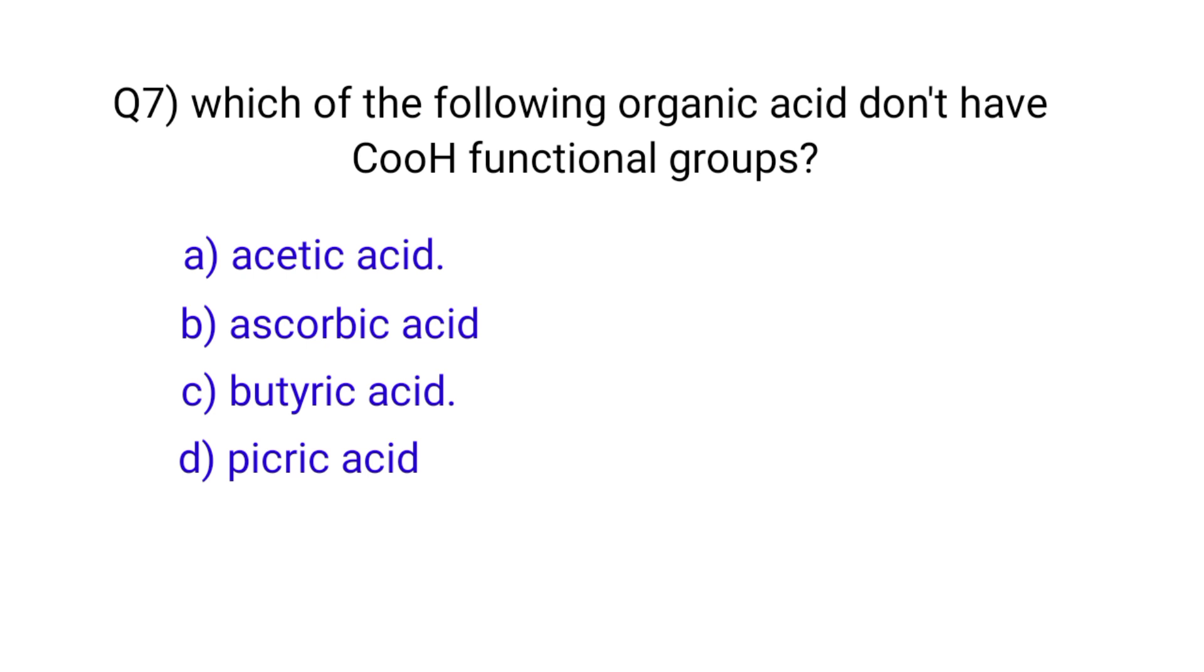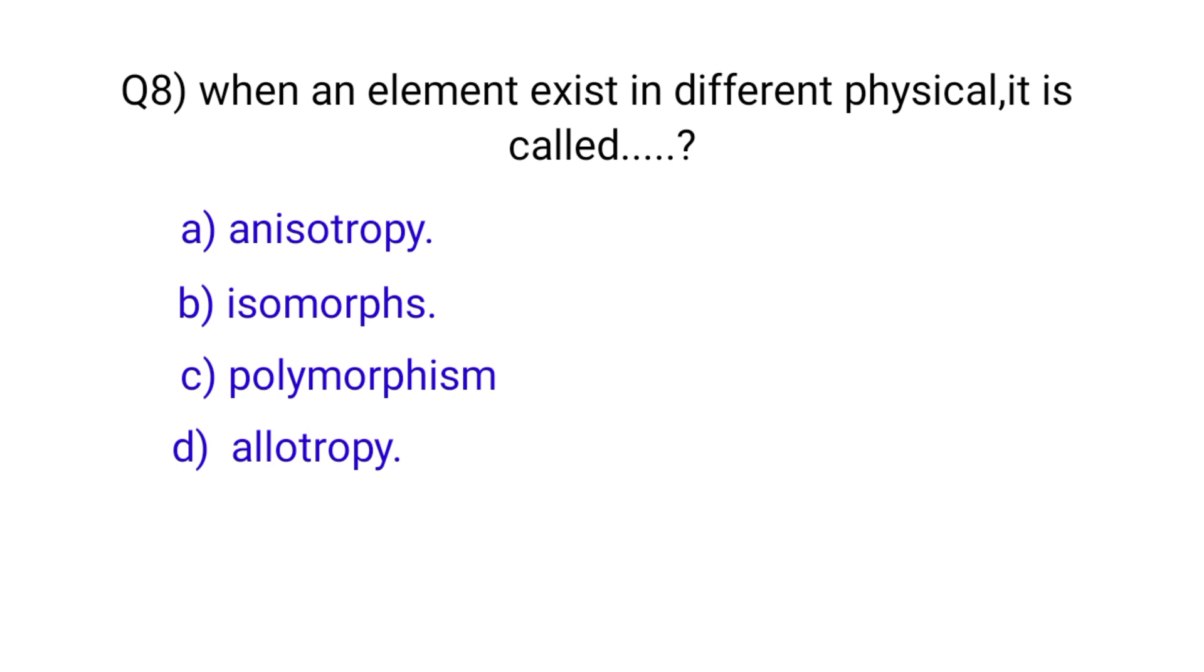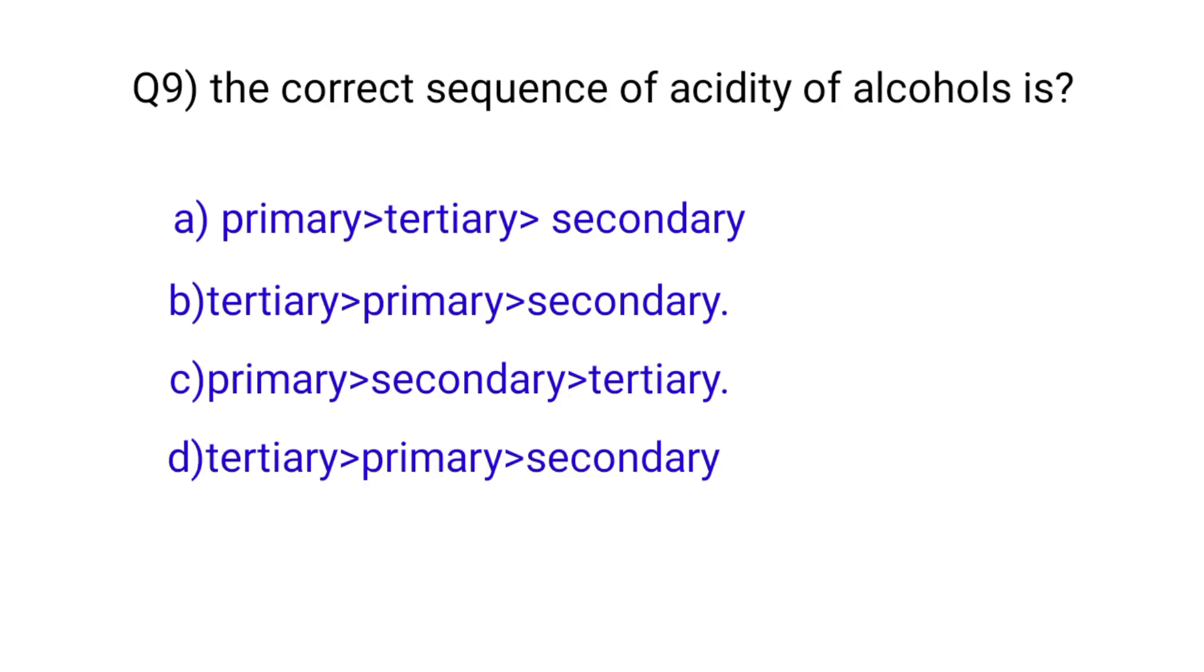Question number seven: which of the following organic acids don't have COOH functional group? The correct option is picric acid. Question number eight: when an element exists in different physical forms, it is called? The correct option is D, allotropy.